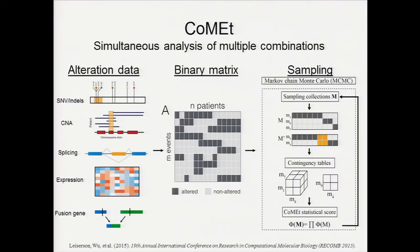I've described the new weight function for COMET. Let me briefly describe the COMET pipeline. We can take multiple types of alteration and turn those alterations into a binary matrix. COMET is able to identify multiple pathways simultaneously by multiplying their weights. Since it's typically impossible to enumerate all possible combinations in this mutation matrix, we use MCMC to sample combinations in proportion to their weight.